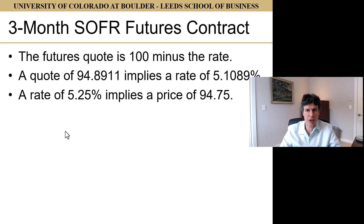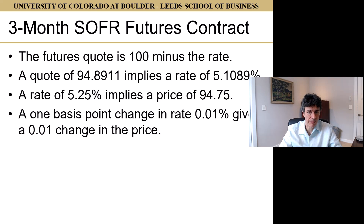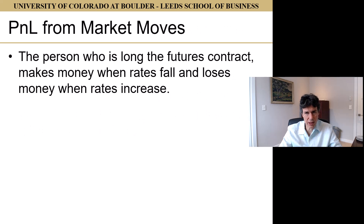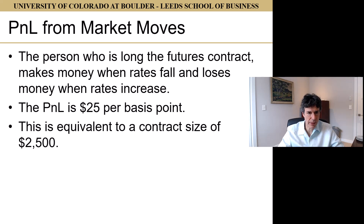The futures quote is 100 minus the rate. A quote of 94.8911 implies a rate of 5.1089%; a rate of 5.25 implies a price of 94.75. A one basis point change in rate — 0.01% — gives a 0.01 change in price. A person who is long the futures contract makes money when rates fall and loses money when rates increase. The P&L is $25 per basis point, equivalent to a contract size of $2,500.